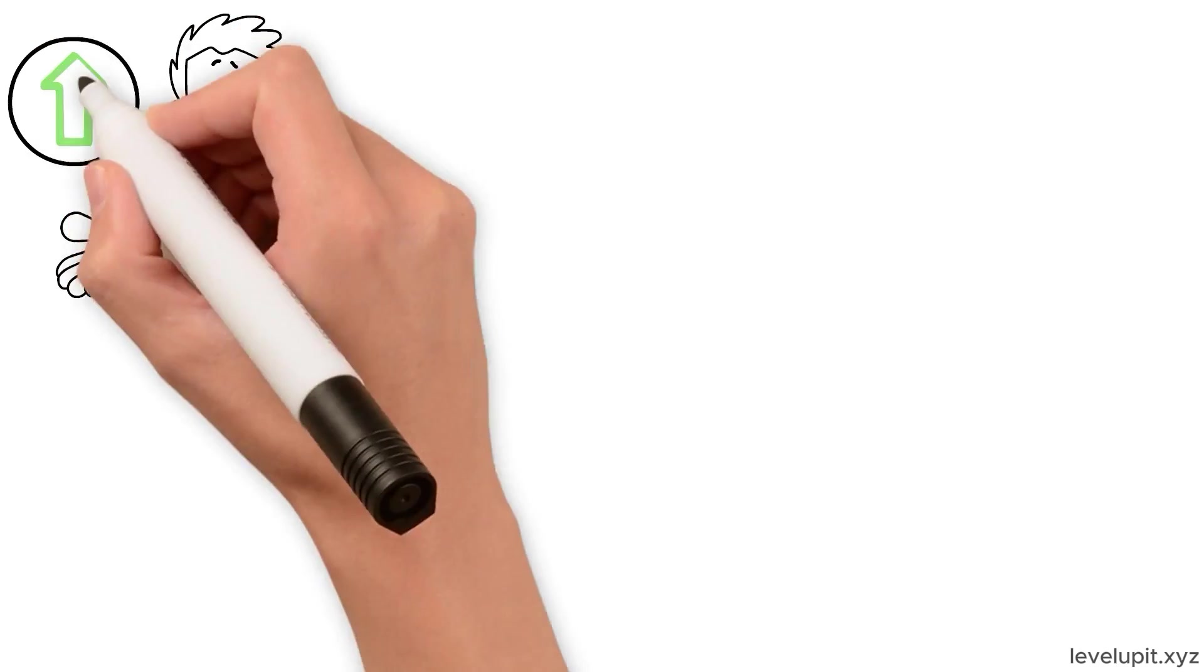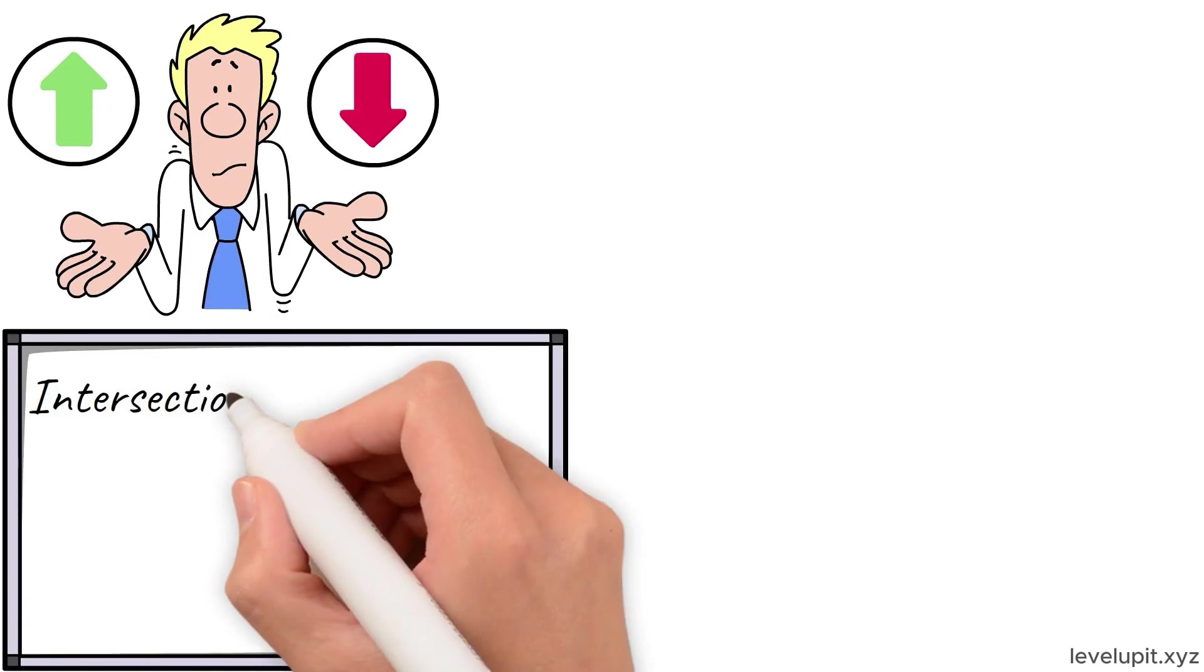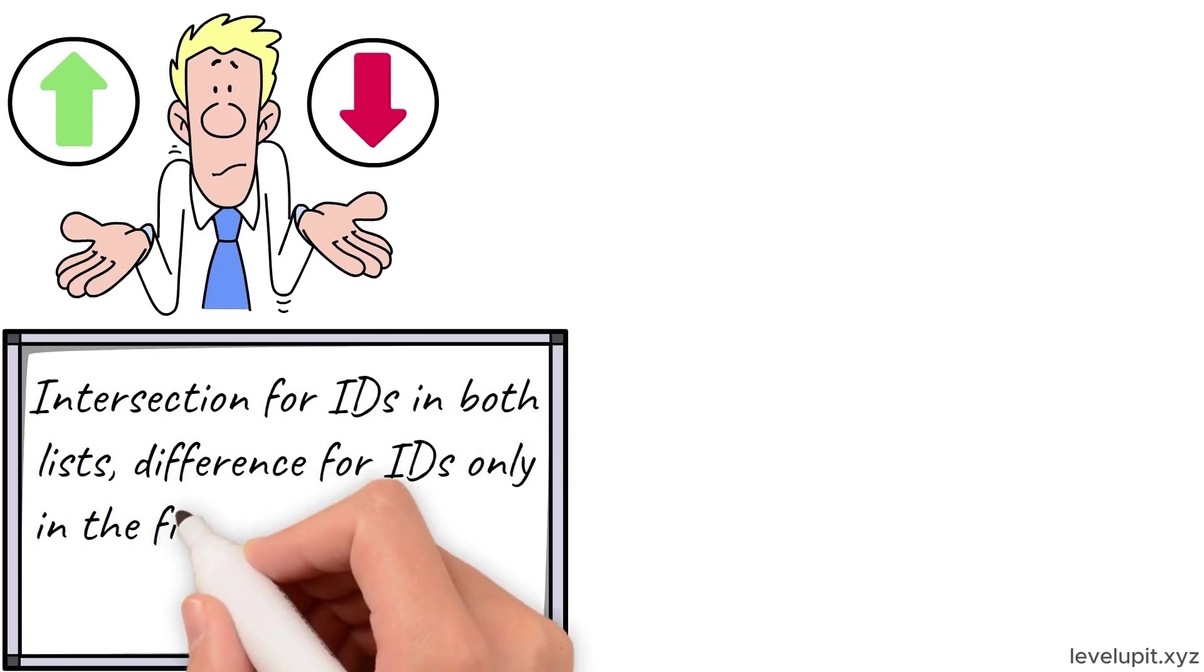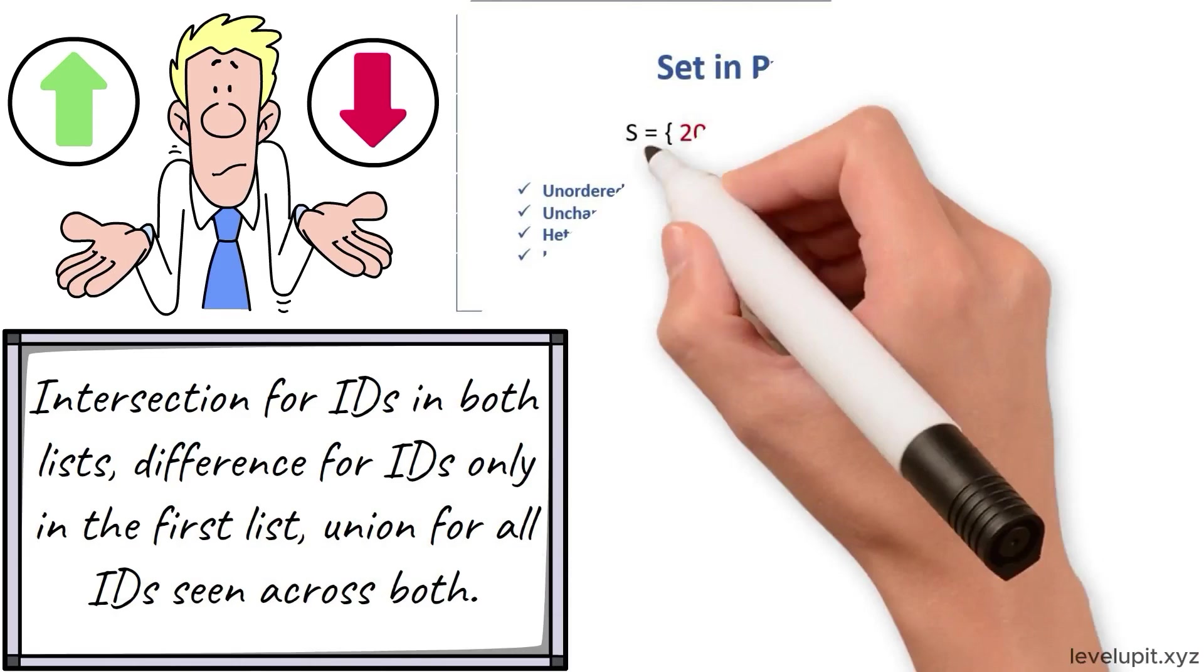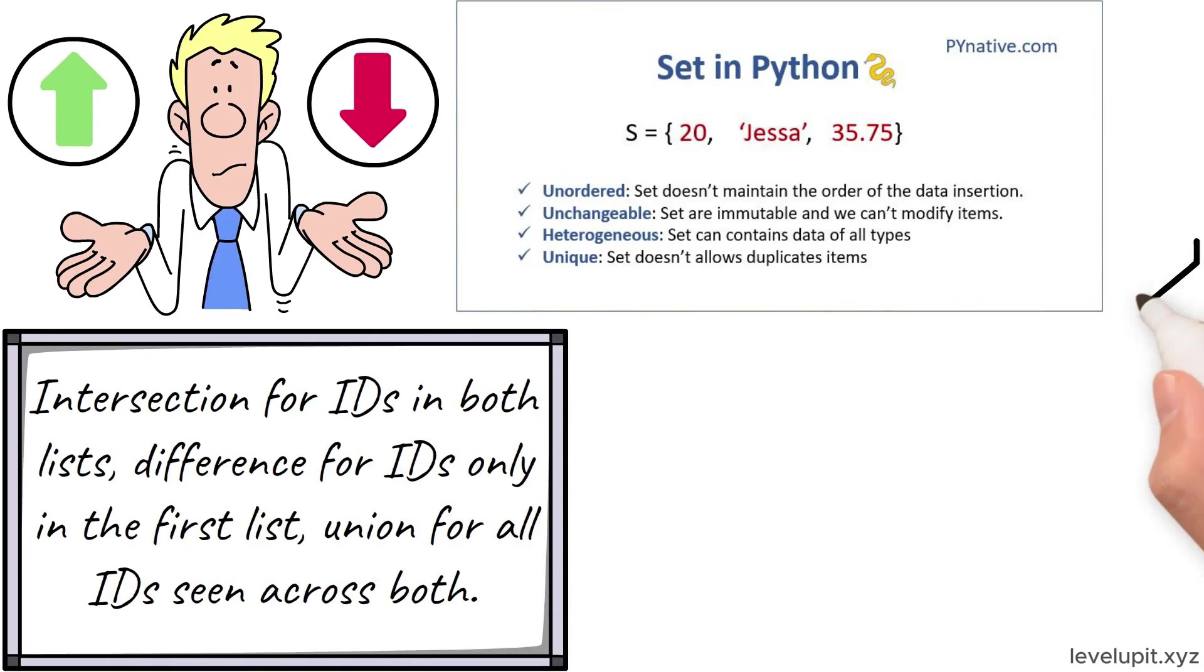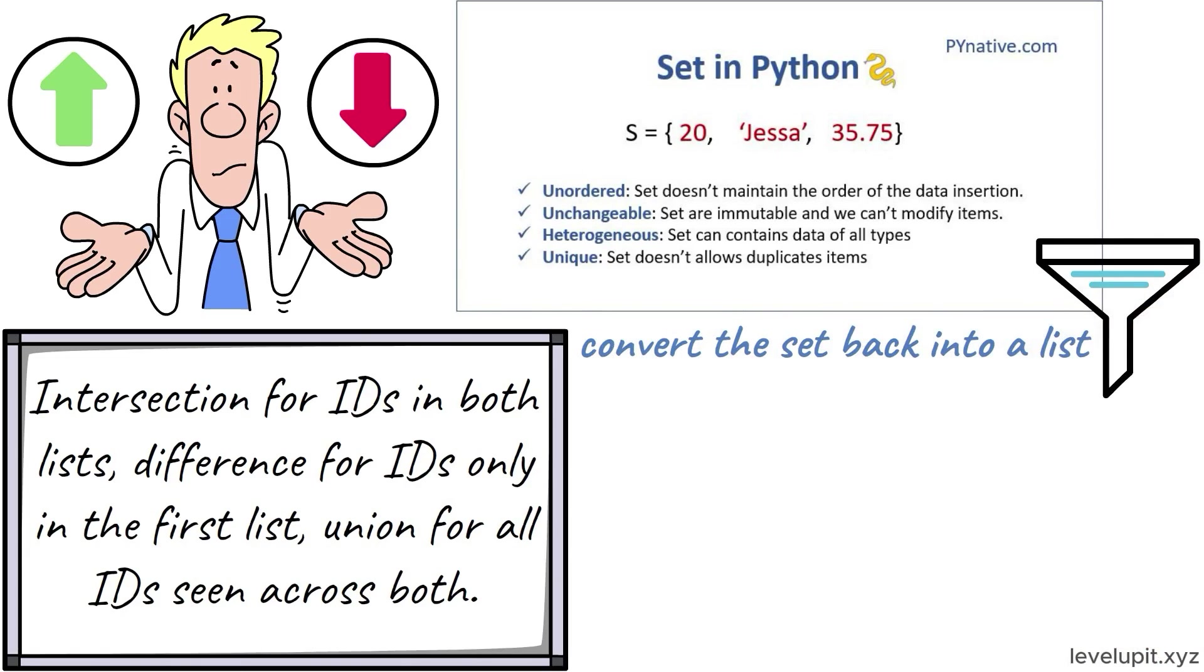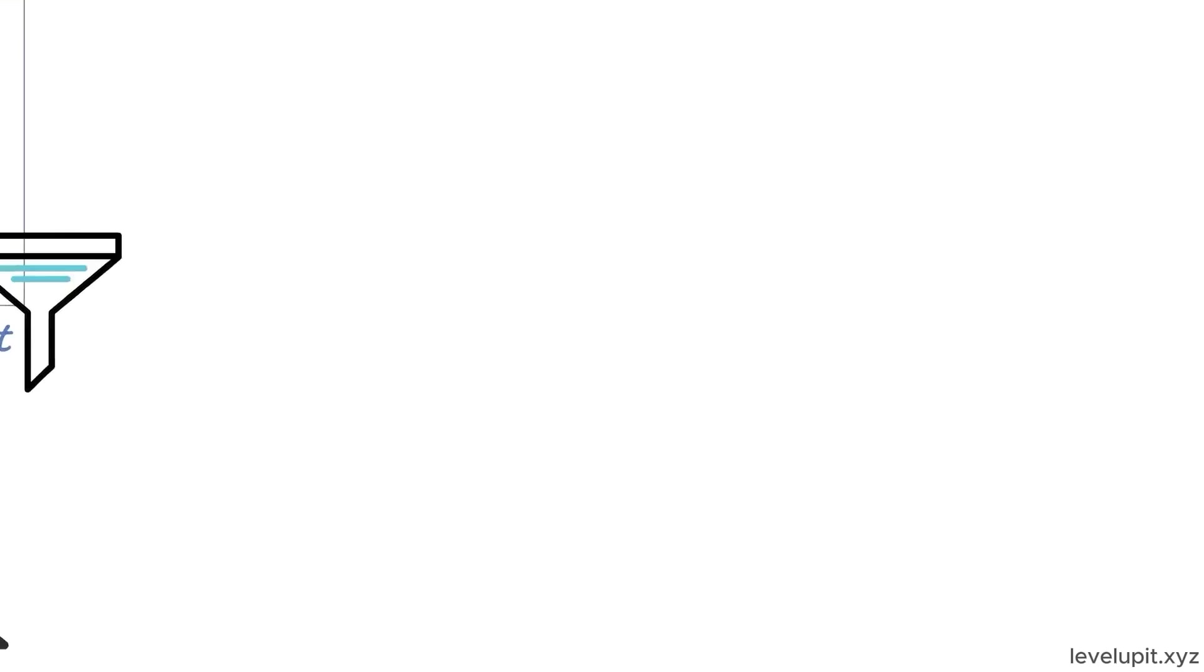If two lists of IDs need to be compared, sets make it easy. Intersection for IDs in both lists, difference for IDs only in the first list, union for all IDs seen across both. Sets don't support indexing and don't remember insertion order, so if a sorted or display order is needed, convert the set back into a list and sort it. Use sets to filter and test quickly, and then switch to lists when presentation matters.